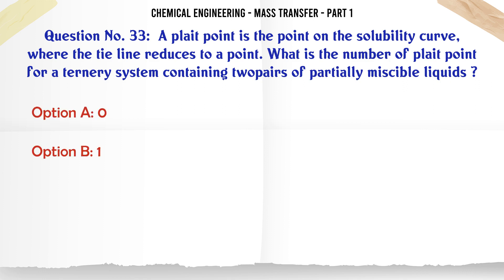A plait point is the point on the solubility curve where the tie line reduces to a point. What is the number of plait points for a ternary system containing two pairs of partially miscible liquids? A. 0. B. 1. C. 2. D. 3. The correct answer is 0.